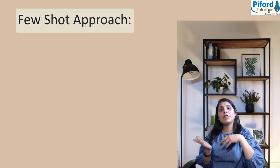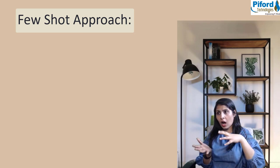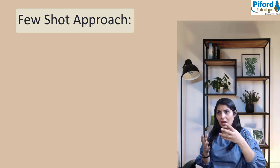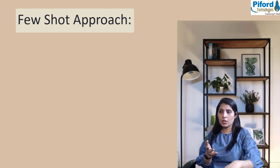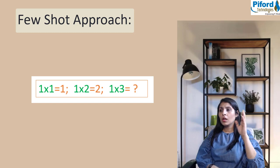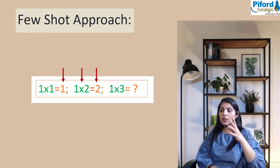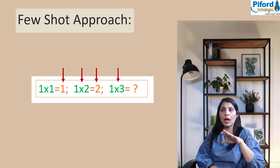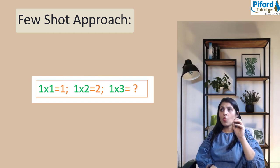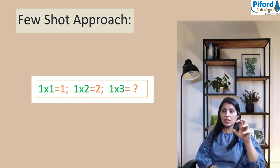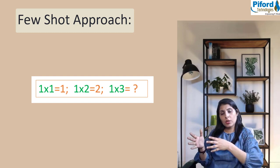With few-shot approach, machines can use knowledge to solve new problems. Let's see an example. We give a problem and solution to the model, again problem-solution. We have problem, solution, problem, solution, and then a problem. Now the model should give us the solution.